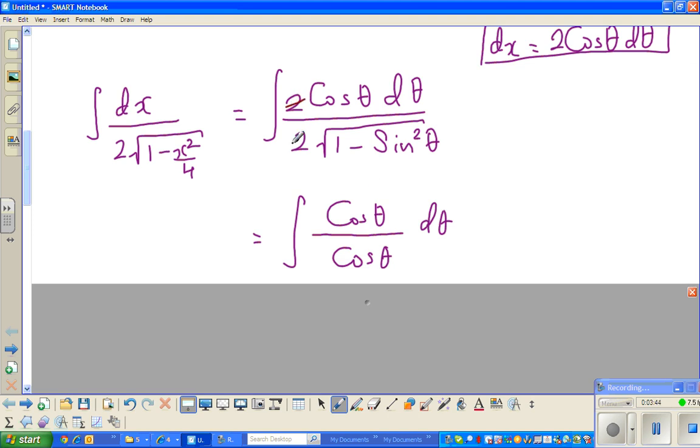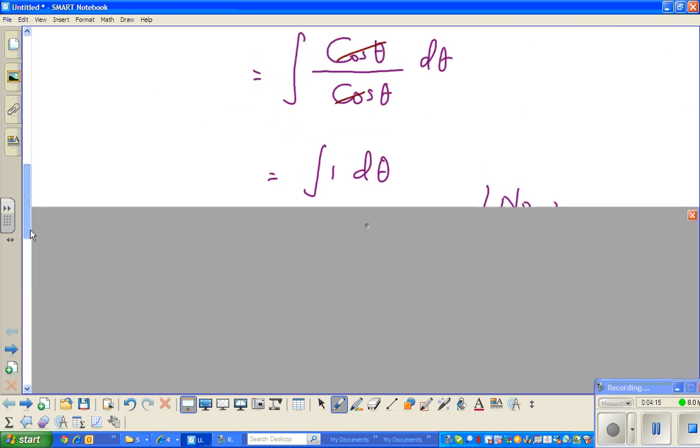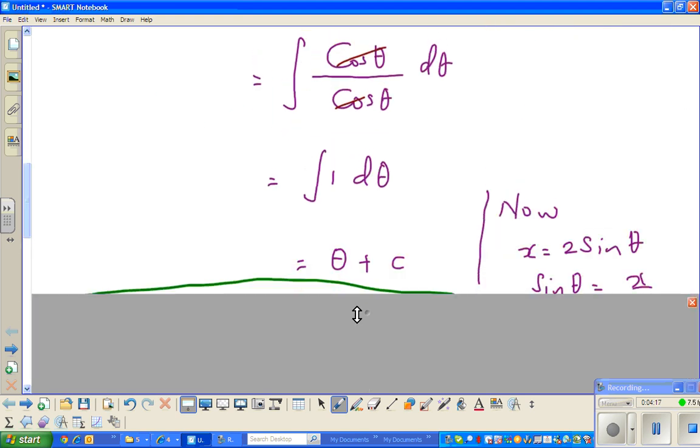This 2 and this 2 gets cancelled. Square root of 1 minus sine squared theta is cos squared theta. If you take square root of cos squared theta, it's cos theta. So if this and this gets cancelled, that is 1 dθ. Integration of 1 dθ, and integration of 1 is theta.